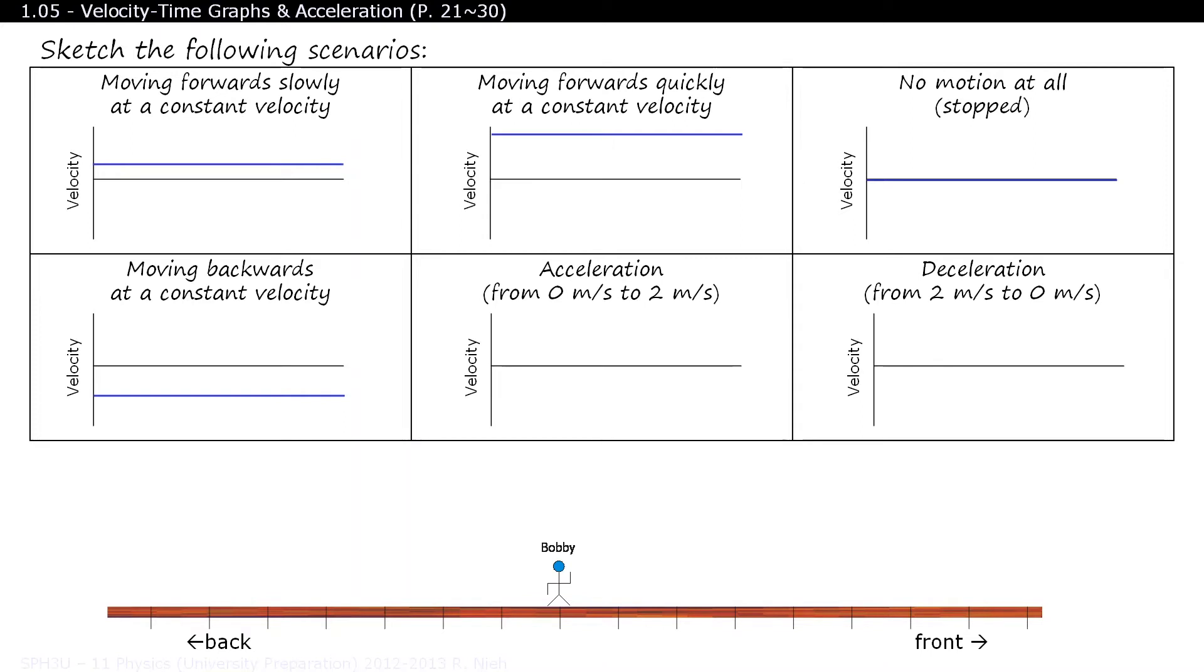That's one of the general trends in a velocity-time graph. When the data is above the time axis, the object is moving forwards, and when the data values are below the time axis, the object is moving backwards.